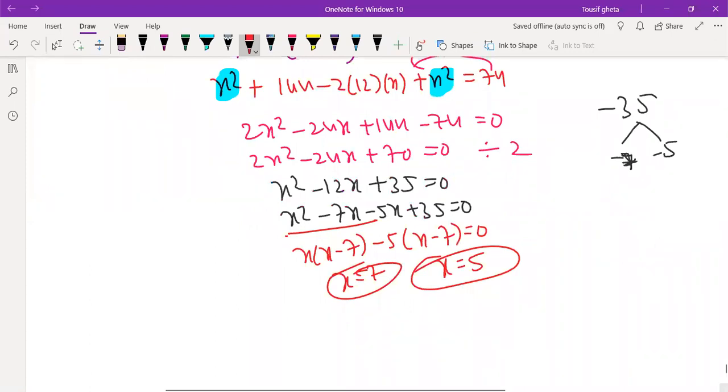So therefore you can write 2 parts are x, so 7. You can take any one. And other, no problem Shreeta. I was just kidding. So other is 12 minus x. 12 minus 7 will get 5.